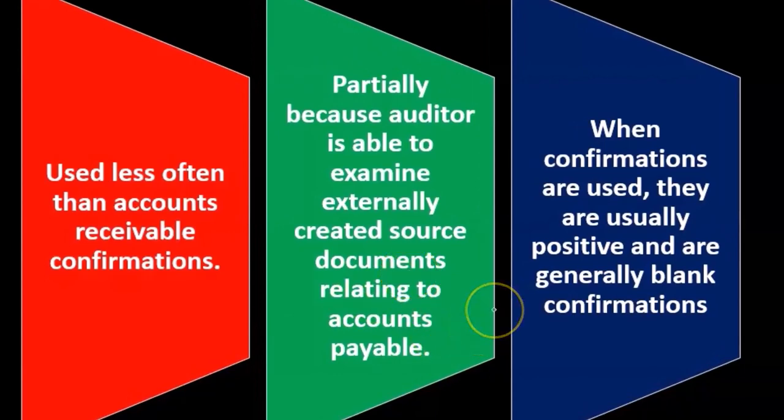When confirmations are used for accounts payable, they are usually positive and generally blank confirmations. We're not sending a balance and asking the vendor to confirm yes or no — that would be a filled positive confirmation. We're also not using negative confirmations. Instead, we send a blank confirmation: we tell the vendor the company owes them money as of a certain date and ask them to confirm the balance, without providing the balance ourselves. They fill it in and return it.